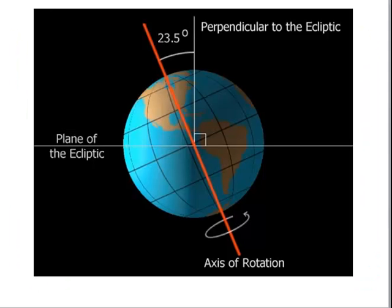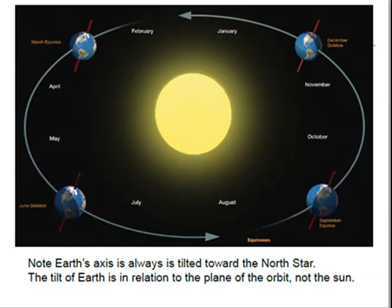Here's a picture of Earth with its 23 and a half degree angle. You can see its axis of rotation in a counterclockwise position. Note that Earth's axis is always tilted toward the North Star. The tilt of Earth is in relation to the plane of the orbit, not the Sun.